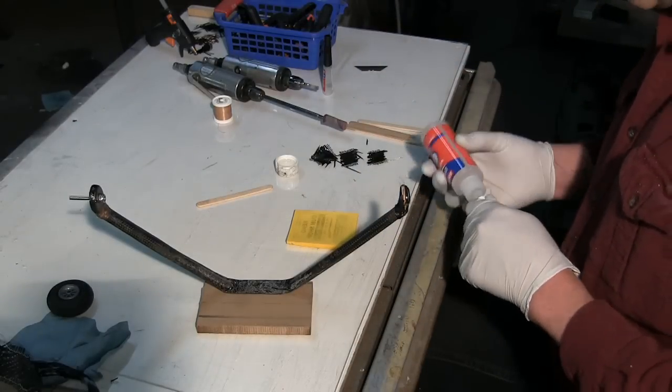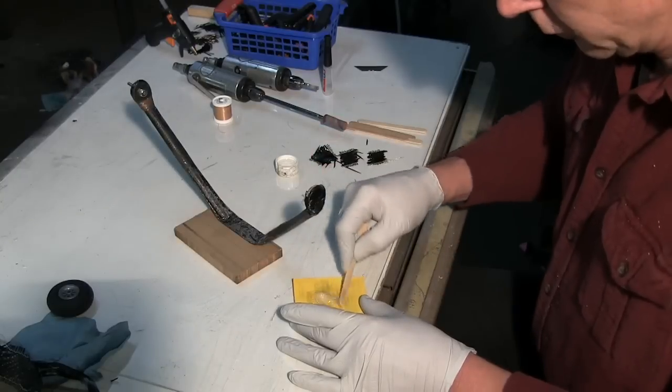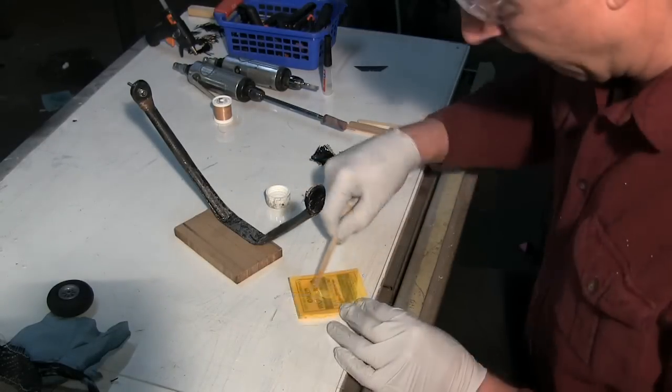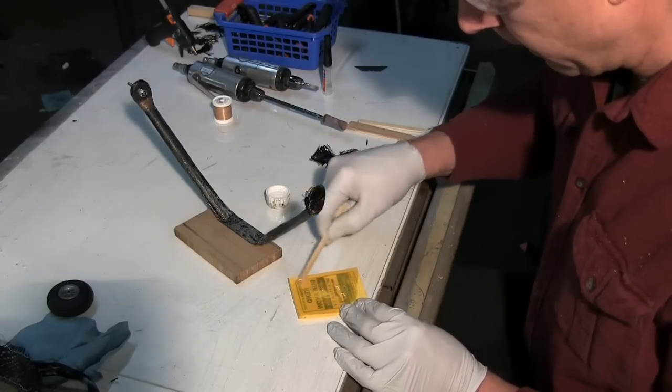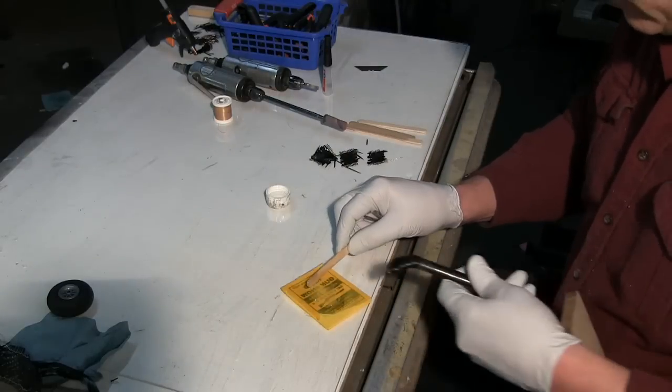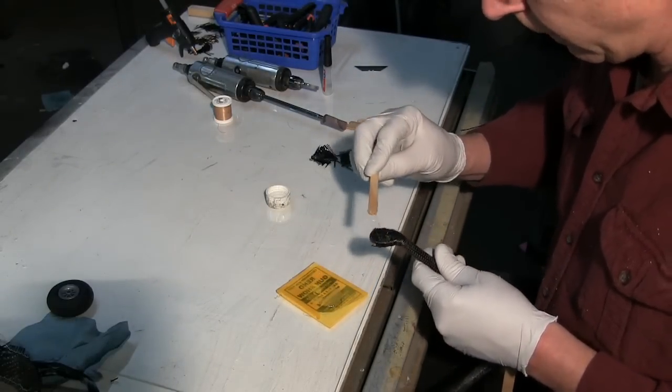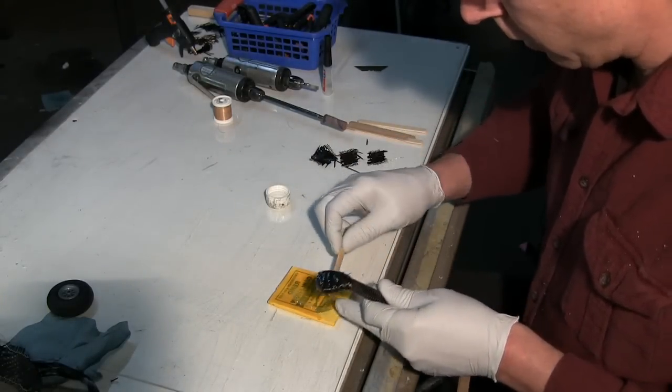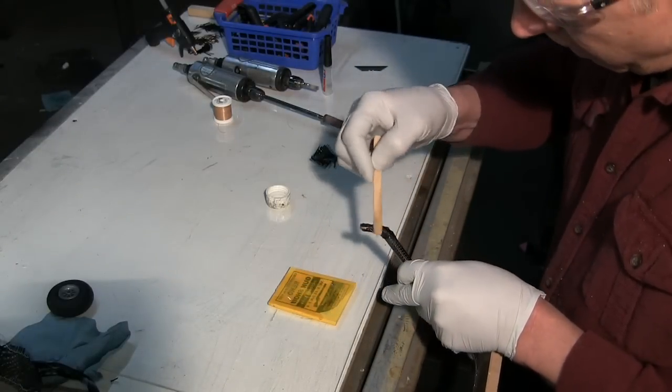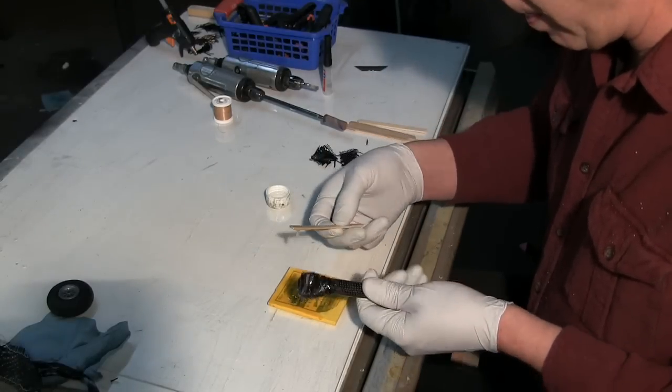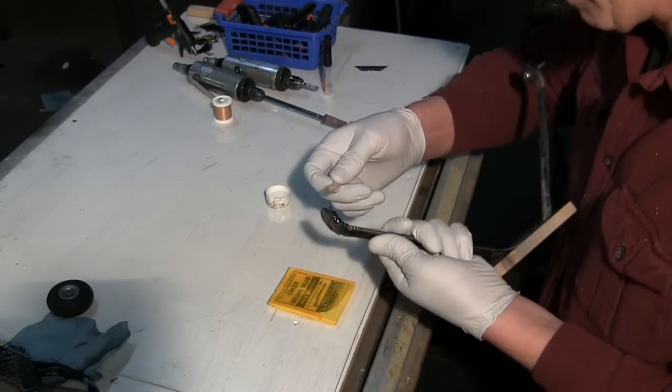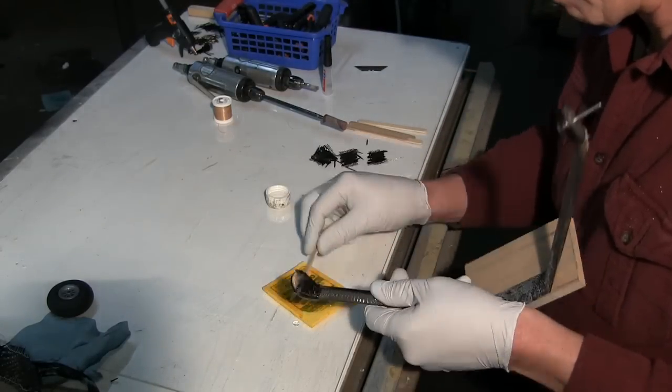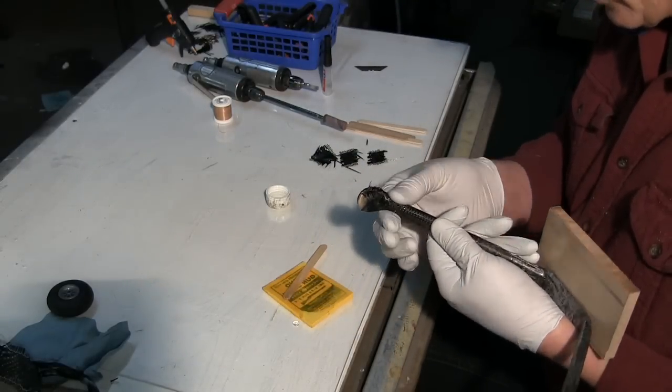Okay, now I'm going to just mix up some standard 5 minute epoxy. I'm going to want to thin this epoxy a little bit so I'm going to use a little bit of denatured alcohol to thin it. That way it will soak into this carbon fiber really good. Okay. Okay. Pulling on here.